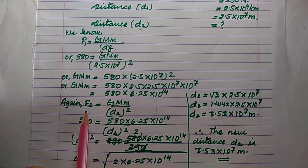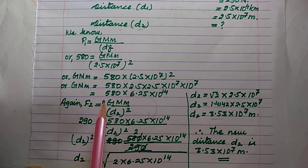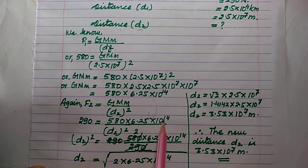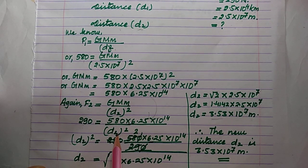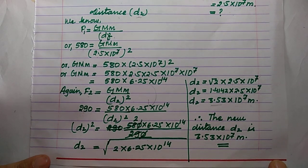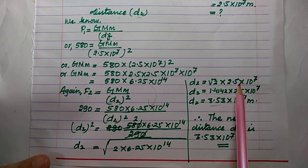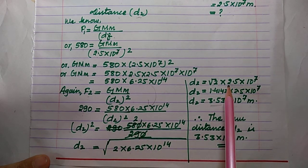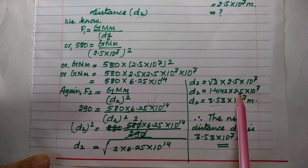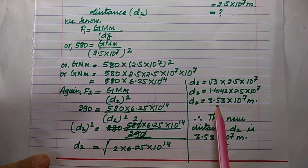Now for F2, using F2 = GMm / D2²: F2 = 290 Newton (half of 580). Substituting the value of GMm found earlier and solving for D2, we get D2² on the left-hand side. D2 = √2 × 2.5 × 10⁷. Since √(6.25) = 2.5 and √2 = 1.4142, the new distance is 3.53 × 10⁷ meters.